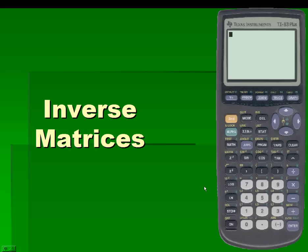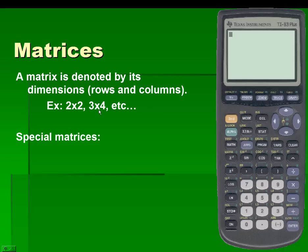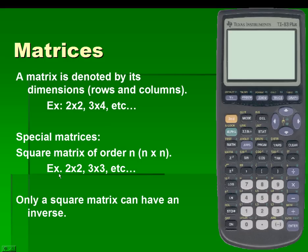A matrix is denoted by its dimensions — its rows and columns. For example, a two by two matrix has two rows and two columns, and a three by four matrix has three rows and four columns. We have special types of matrices, and one special type in particular is a square matrix of order n, which is a matrix with the same number of rows as columns — for example, two by two, three by three, four by four, and so on.